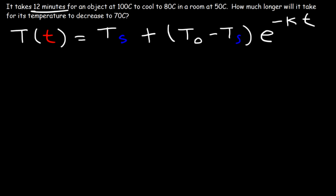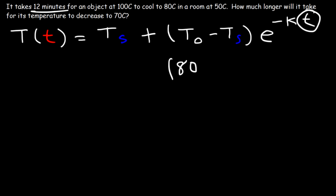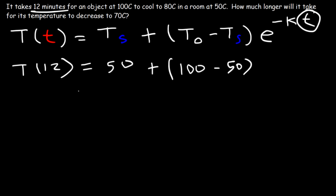The 12 minutes is lowercase t — the time it takes for the temperature to go from 100 to 80. The initial temperature T-sub-O is 100 (not 80 — correcting that), and it decreases to 80. The surrounding temperature T-sub-S is 50. The final temperature after 12 minutes, T(12), is 80, and lowercase t is 12.